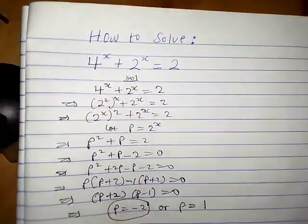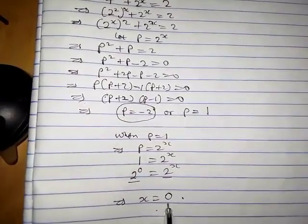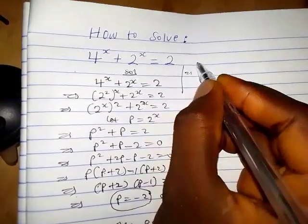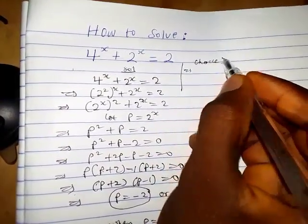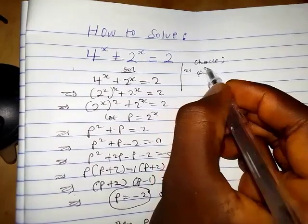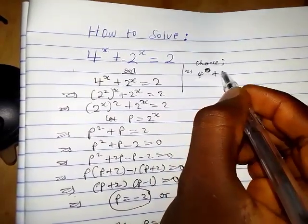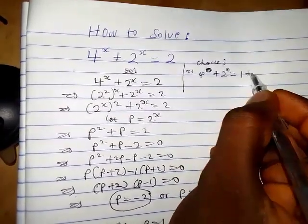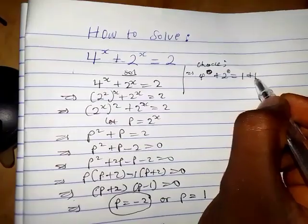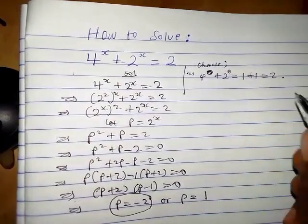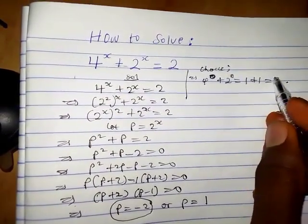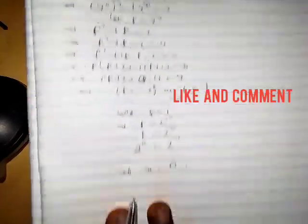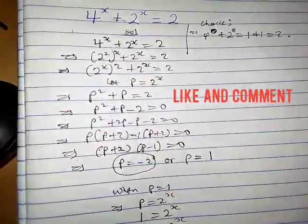Now let's check our answer. When x equals 0, we have 4 raised to the power 0 plus 2 raised to the power 0, which equals 1 plus 1, giving 2. That matches the right-hand side, confirming that x equals 0 is the correct solution to this exponential problem. Thanks for watching.